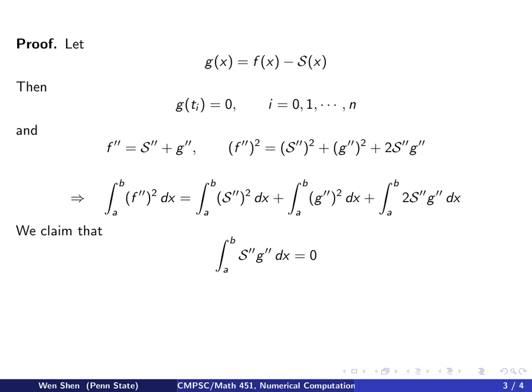So here comes an important claim. We claim that the last term here in the previous equation, the integral from a to b of s double prime g double prime, exactly equals 0.